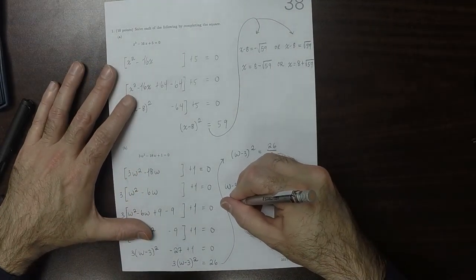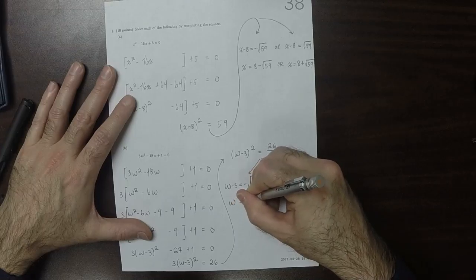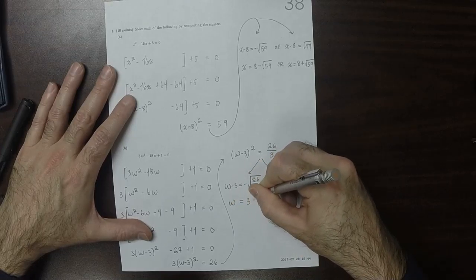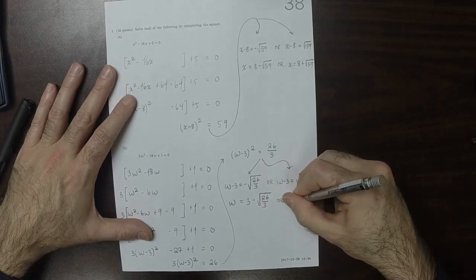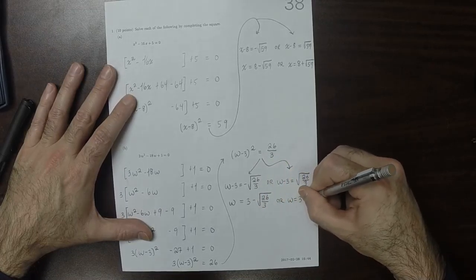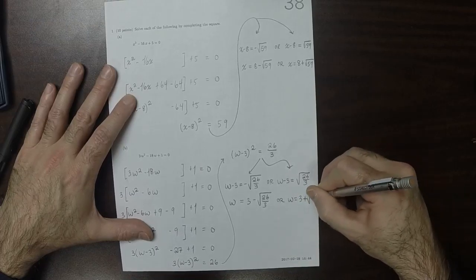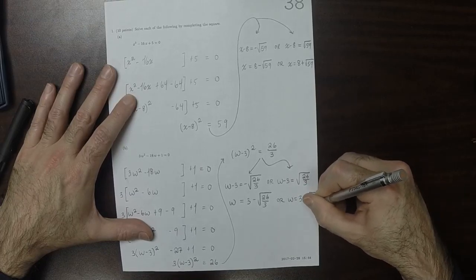And then solving, w is 3 minus the square root 26 over 3, or w is 3 plus the square root 26 over 3.